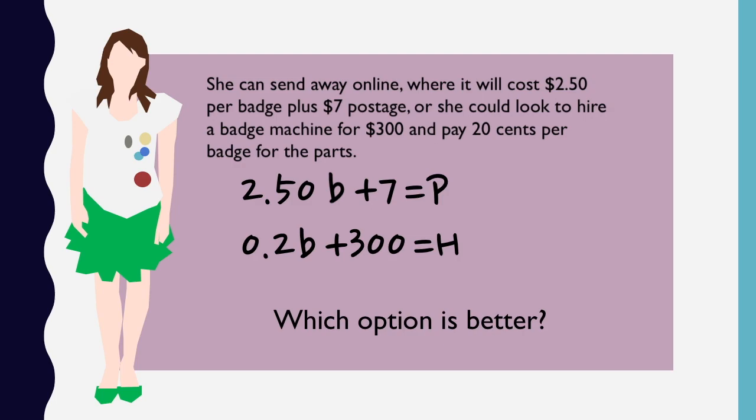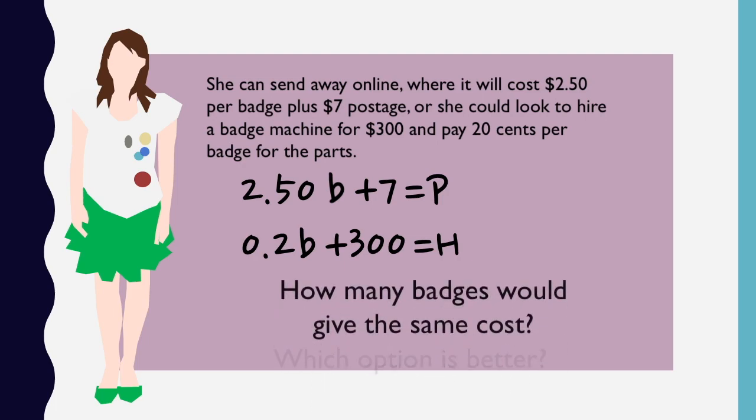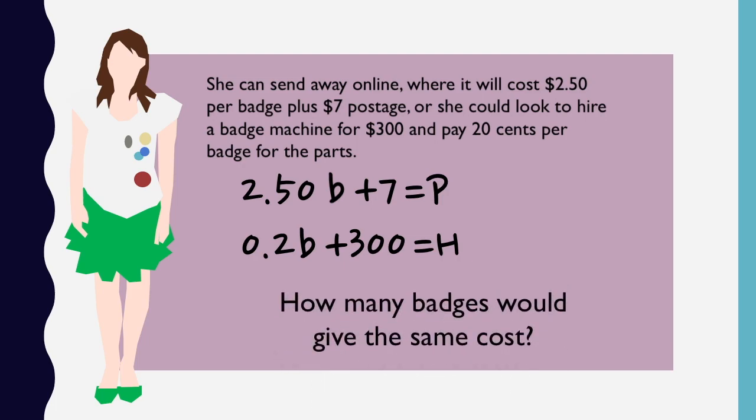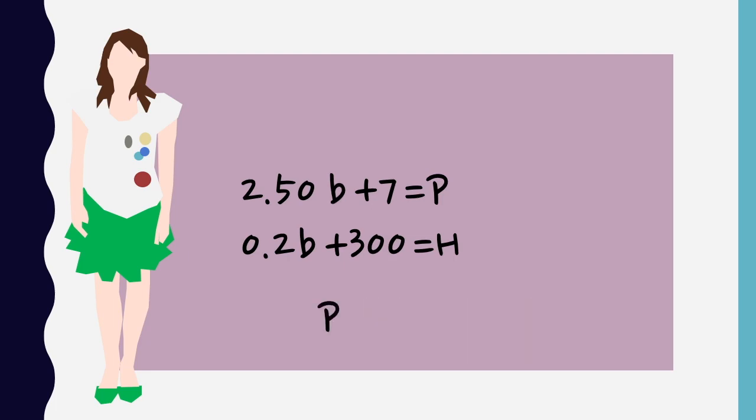So one thing we might do in the entry stage of this problem is to reframe the question as one that asks when the two methods will result in the same cost. How can we work this out? Well, that's going to be when p is equal to h.